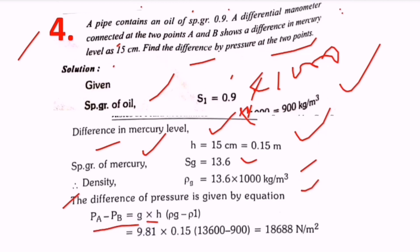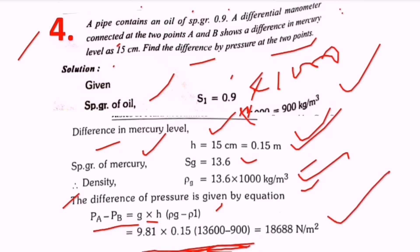Substituting values: g is 9.81, h is 0.15, rho mercury is 13,600, and rho oil is 900. This gives pa minus pb equals 18,688 N/m². That is the way to find the difference of pressures for this type of problem.